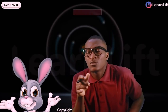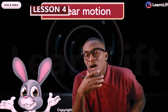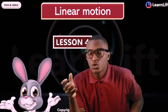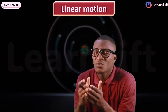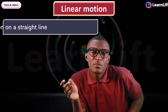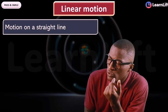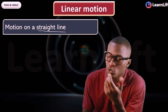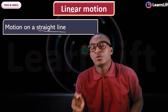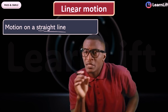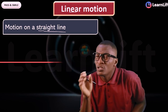Hello guys, in this class let's talk about linear motion — this will be our lesson four. Linear motion simply means motion of a body on a straight line. The word 'linear' talks about straight or rectilinear. Motion of a body on a straight line is called linear motion.